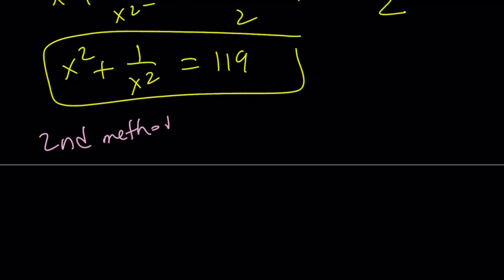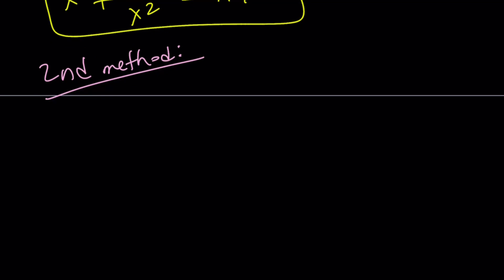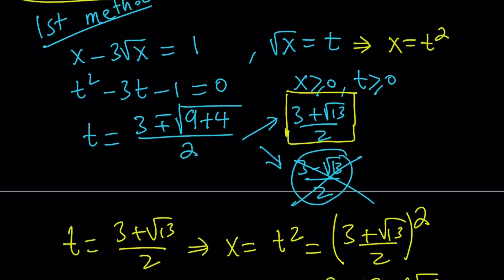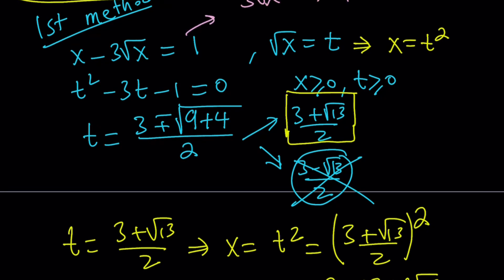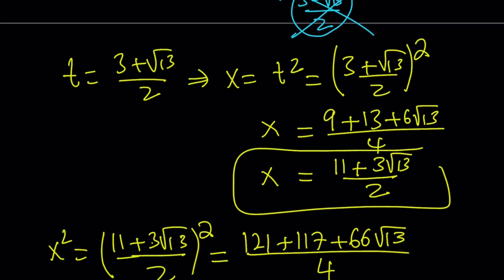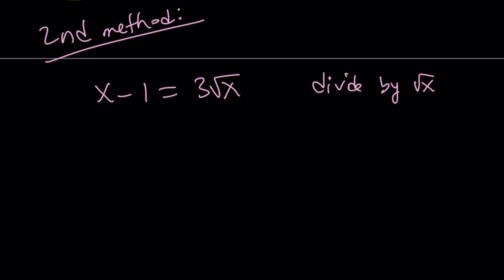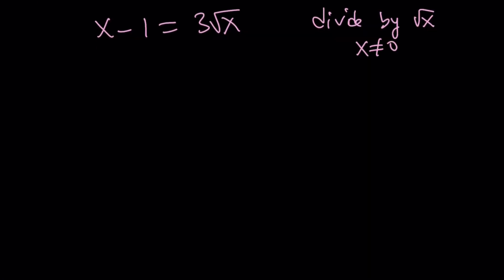Now, my first method is a little brute forcey. So for my second method, we're going to do something smarter. I just wanted to add a quick remark here. Remember how we solved the quadratic? You could also just isolate 3 root x and then square both sides, and you could solve the quadratic equation that way too. Same thing. Now for the second method, here's what we're going to do. We're going to divide by square root of x. Of course, x does not equal 0. If x equals 0, it's not going to work. So we're going to divide both sides by square root of x, and good things will happen.